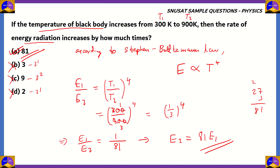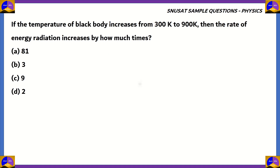According to the Stefan-Boltzmann law, we need to take temperature to the fourth power, and that quantity is proportional to — and dependent on — the energy radiation. So, the energy radiation is proportional to T to the power of 4, where T is temperature. Using that, we found E2 equals 81 times E1, so the rate of energy radiation increases by 81 times.